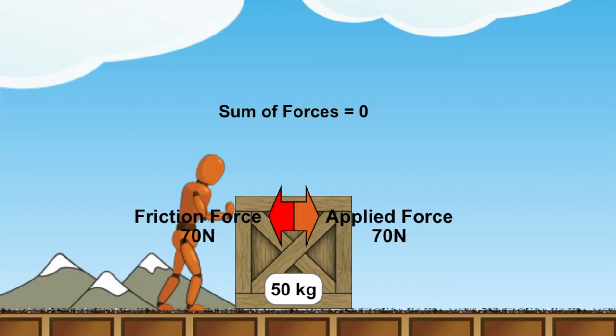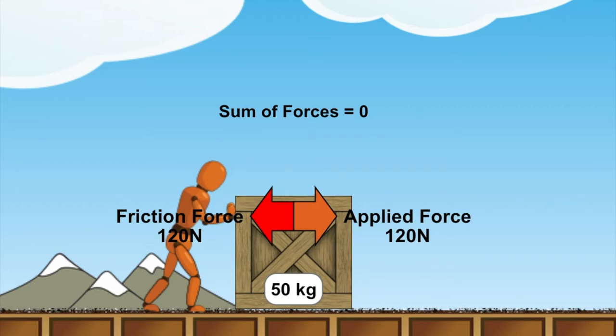We increase the force to 50 Newtons and the box still does not move, and again to 120 Newtons. The frictional force is still equal and opposite to the applied force so the box does not move, but the static friction will soon reach its limit.